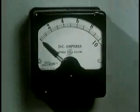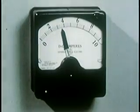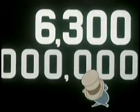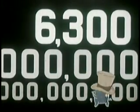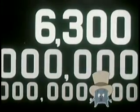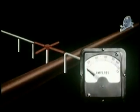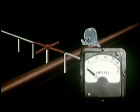The unit of electric current is the ampere. One ampere — now hold on to your hat — is six billion, three hundred million, billion electrons passing any given point in one second. Current or amperage, then, is the number of electrons that pass a given point in a given time.